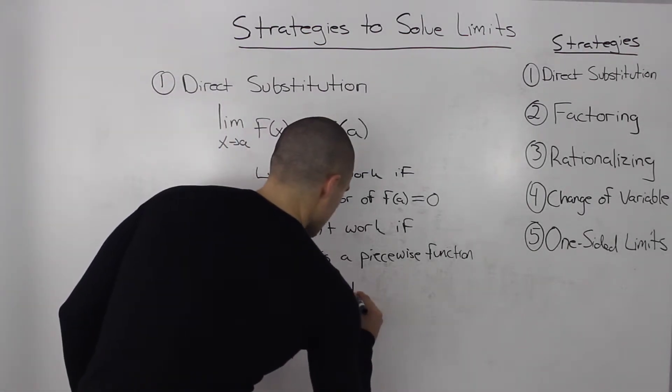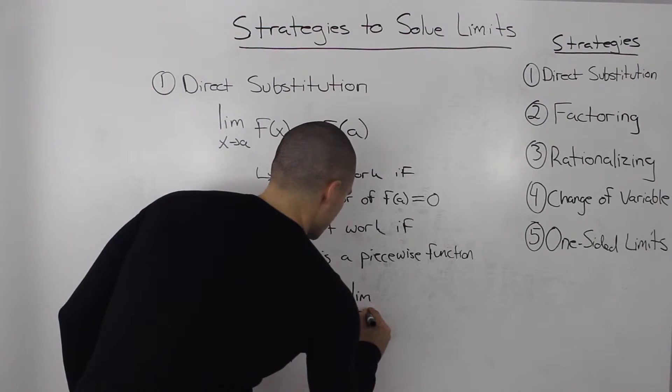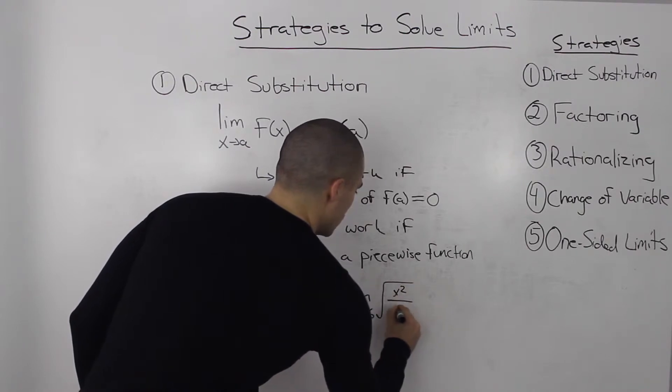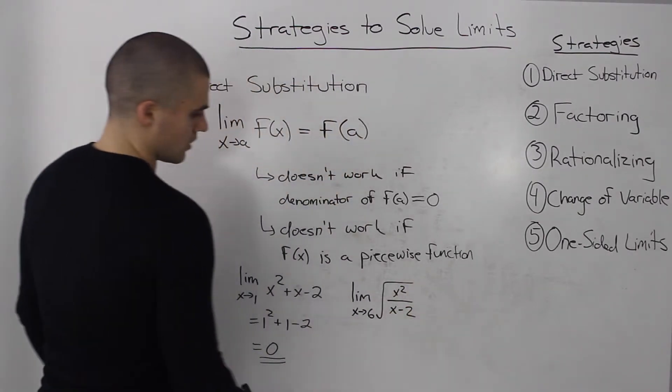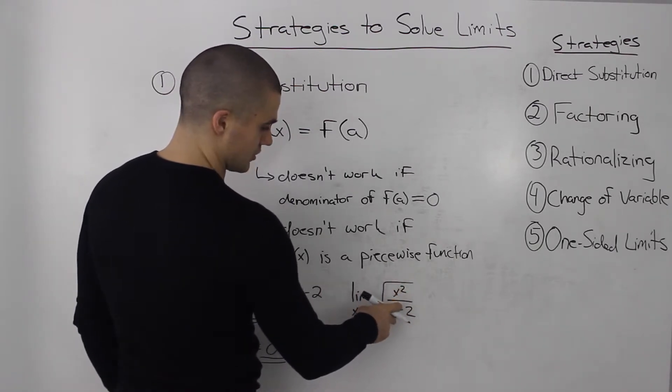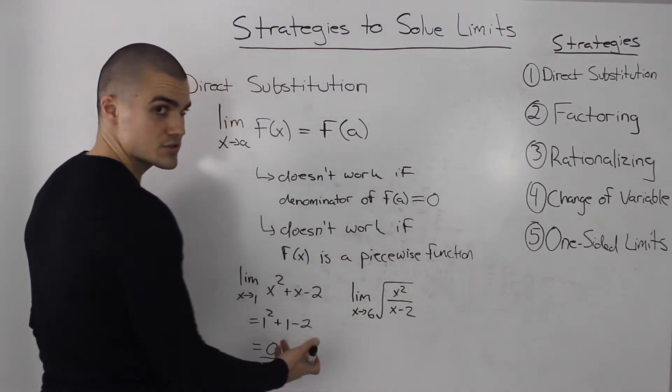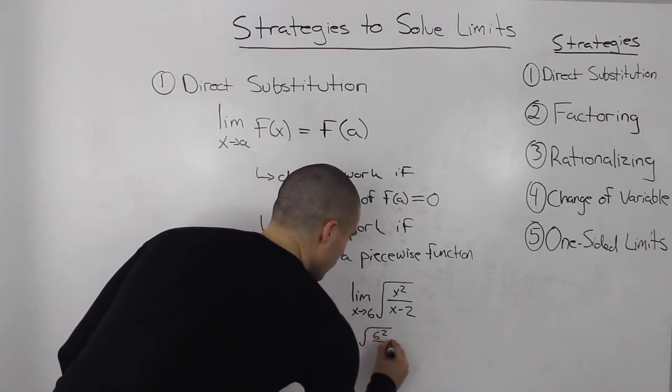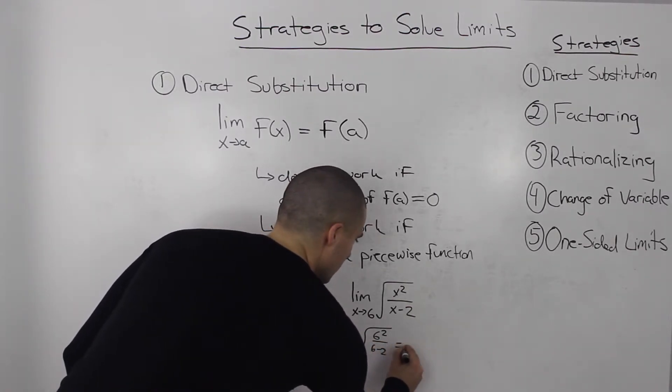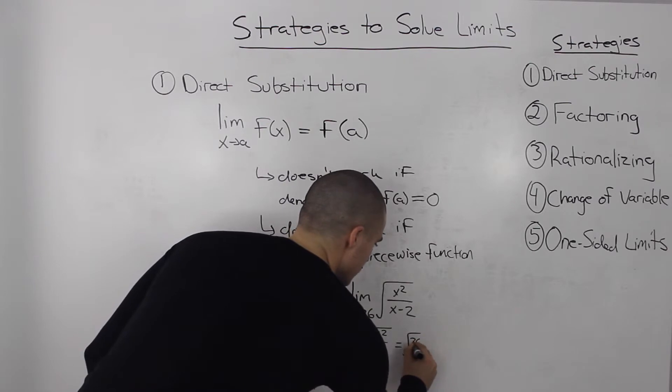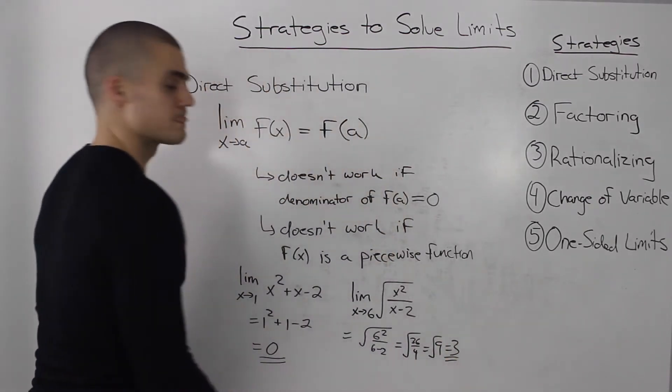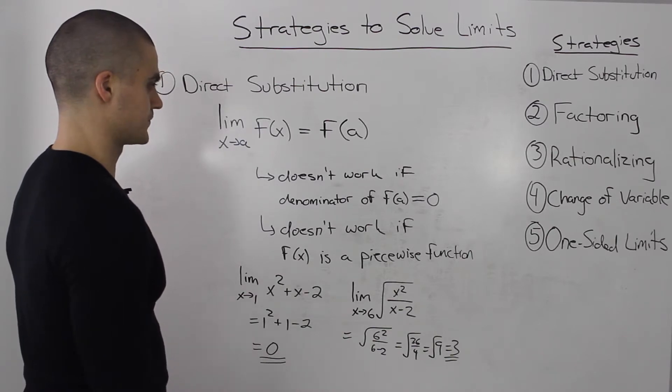What about another example? The limit as x approaches 6 of √(x²)/(x - 2). If we plug in 6 into this function, we won't have a denominator of zero, so we can go ahead and do that. That equals √(6²)/(6 - 2), which is √(36/4) = √9 = 3.